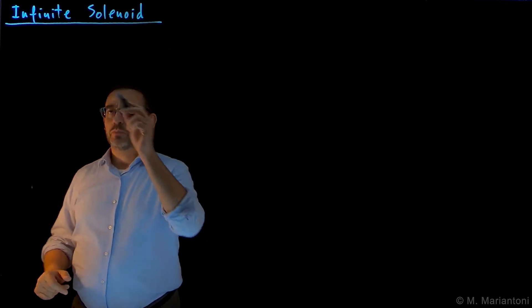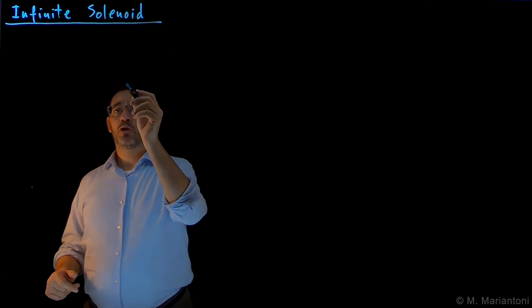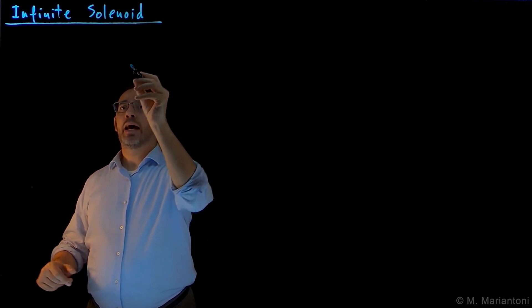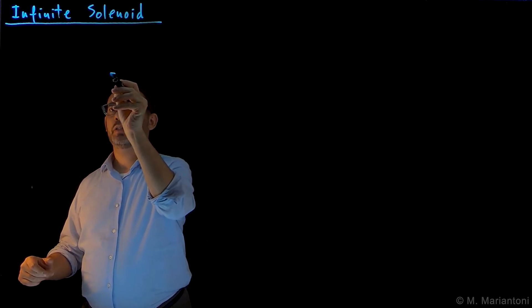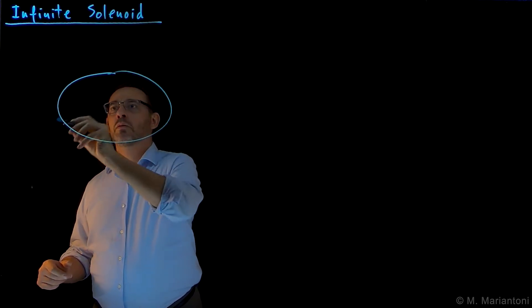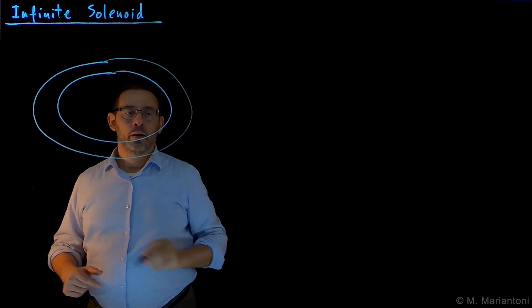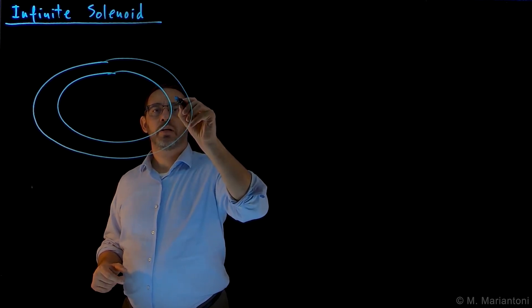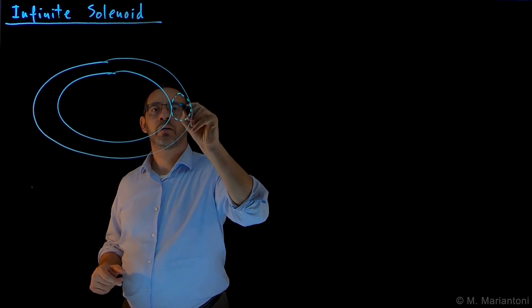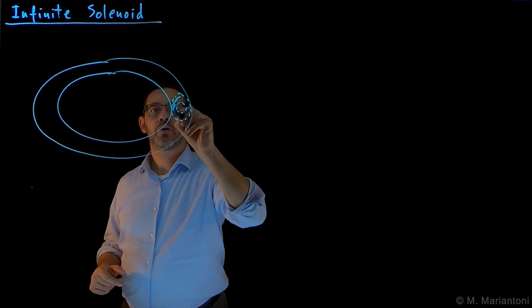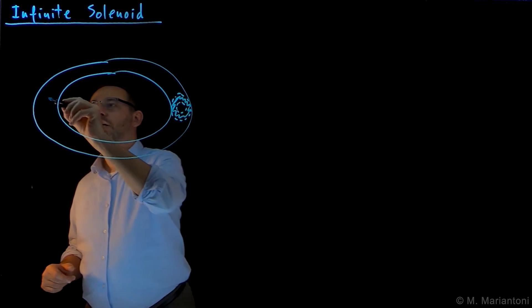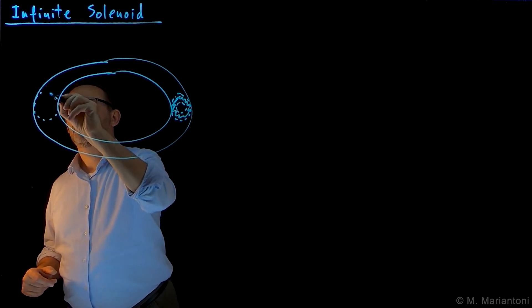So again, let's consider our toroidal solenoid as we have seen up until now. So this is our toroidal solenoid. And of course there is a cross-sectional area here with some vacuum, as always, similarly here.